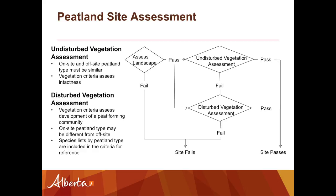If it fails the undisturbed assessment, your site doesn't necessarily fail — it means the site has been disturbed and you'll have to move into the disturbed criteria. If you've got an obviously disturbed site, you'd bypass the undisturbed assessment and go straight to the disturbed assessment. Disturbed assessments are more work — there's more things to measure and it takes a little more time. The advantage of having undisturbed sites, which we really want to promote, is a quicker and easier assessment.